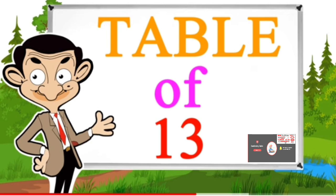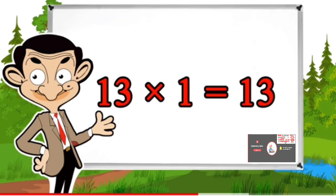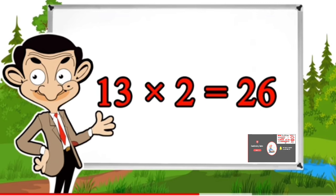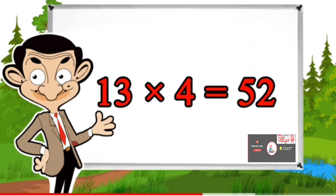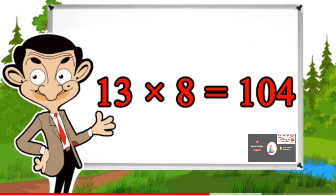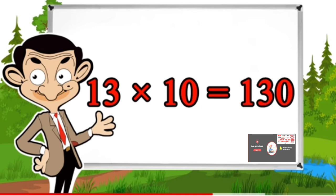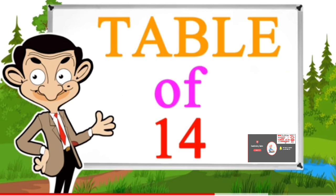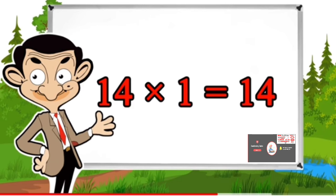Table of 13: 13×1=13, 13×2=26, 13×3=39, 13×4=52, 13×5=65, 13×6=78, 13×7=91, 13×8=104, 13×9=117, 13×10=130.